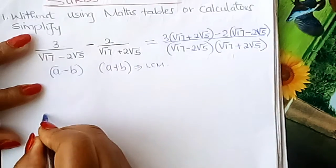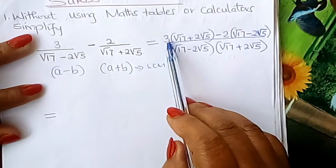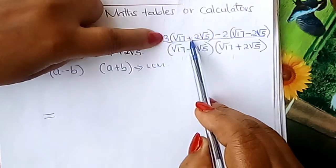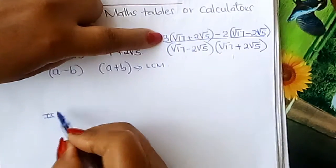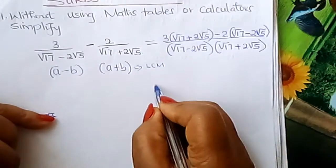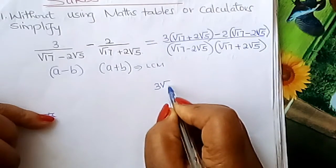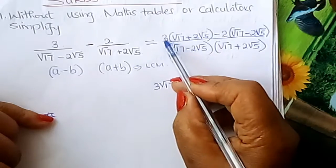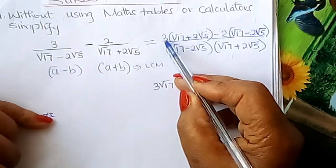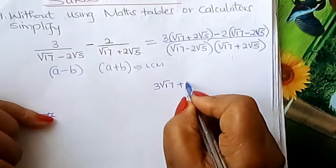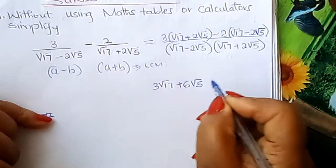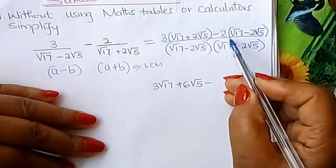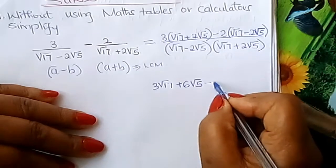Now remove the brackets in the numerator. This gives you 3 root 17 plus 6 root 5 — because 3 times 2 is 6 — then minus 2 root 17.